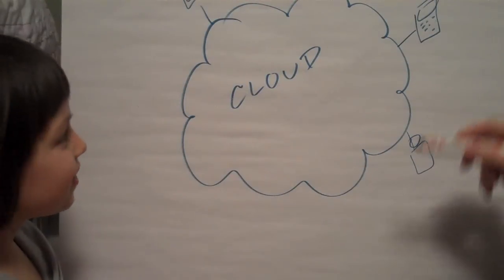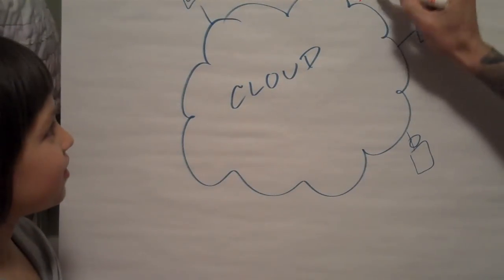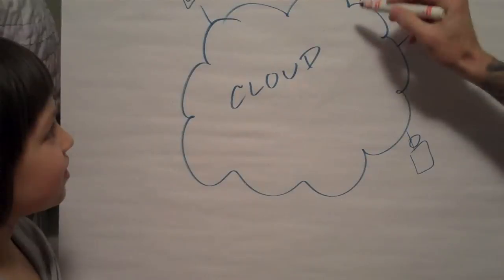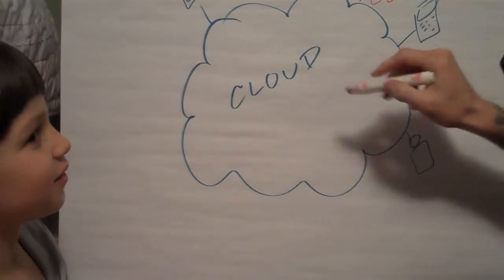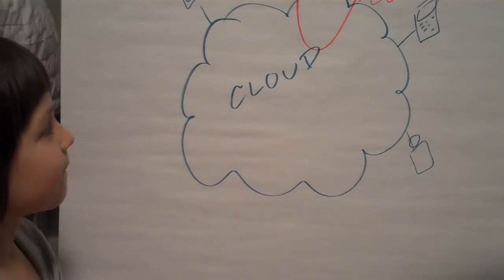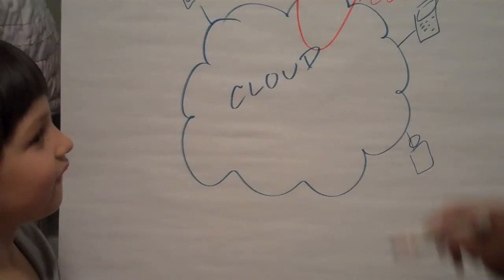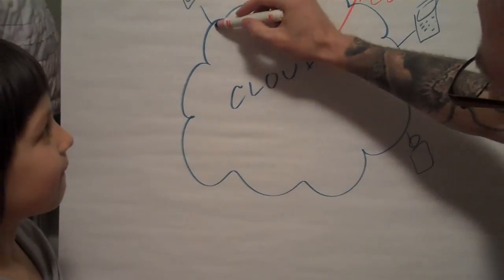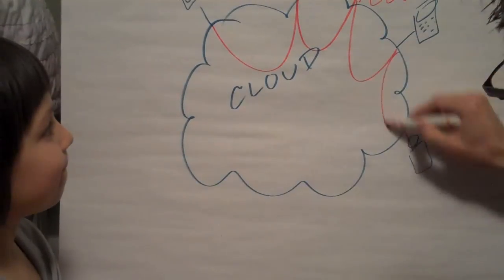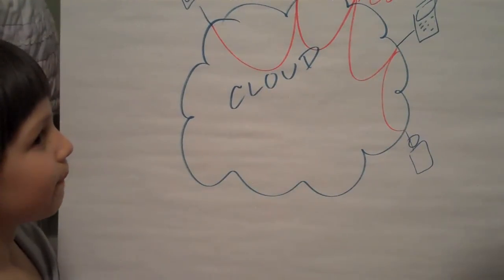So a network is a way for, for example, two computers that are connected either through the air, through the cloud, or through some wires to talk to each other. So imagine if I told you that actually the cloud is a big network.